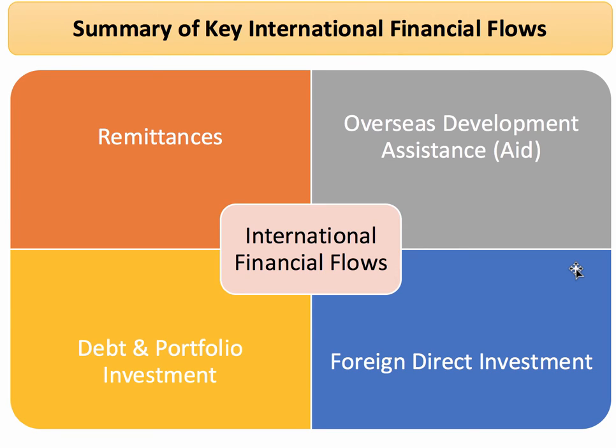Countries can receive external financial flows in several different ways. Remittances is one. Aid is another, otherwise known as Overseas Development Assistance. Debt and Portfolio Investment flows. And, crucially, Foreign Direct Investment.